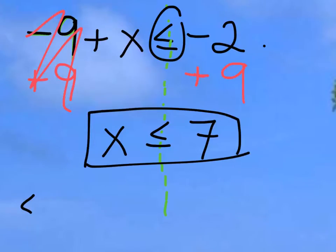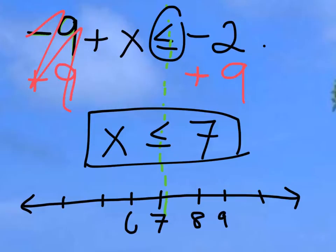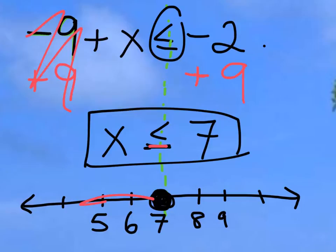Now to express this on a number line, I'm going to draw my number line and put 7 right in the center, with some other numbers around it. I'm going to draw a closed circle at 7, because our solution includes the number 7, with an arrow going to the left, because x is less than 7.